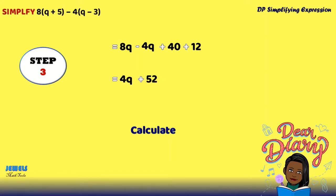So now that we've simplified our expression, our answer will be 4Q plus 52. And remember that you never simplify or calculate unlike terms.